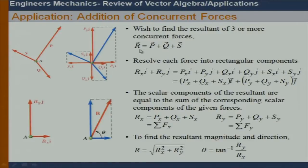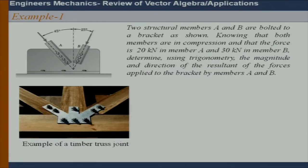So basically R = P + Q + S, and we all know there is going to be Rx — the x-component of the resultant force — and Ry, the y-component. The angle theta will be tan inverse of Ry over Rx. Let's take an example. Once we do this exercise, we are actually going to go through problems on concurrent forces, to apply this knowledge that students will develop.